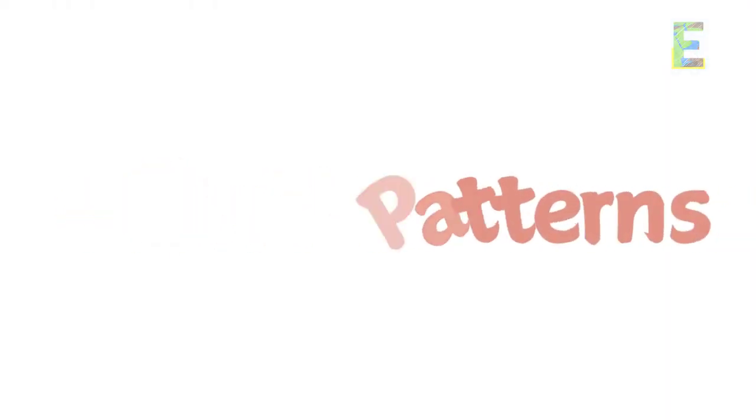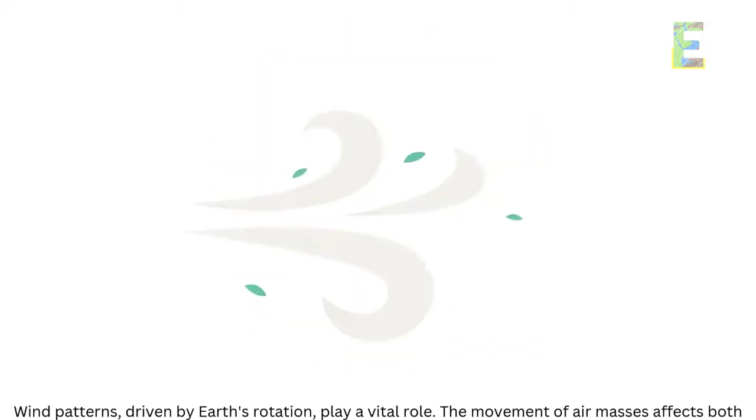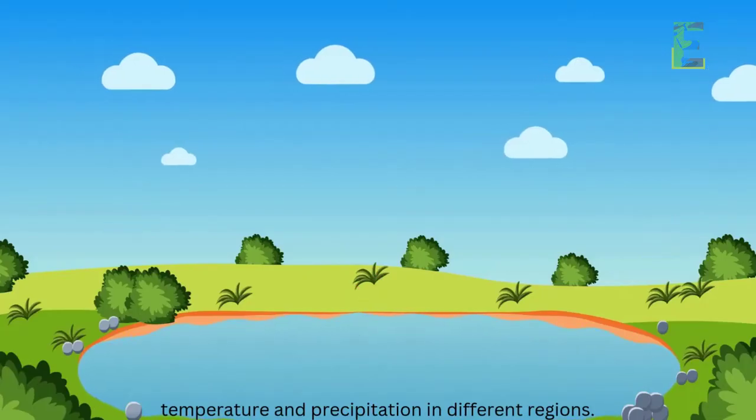Wind patterns, driven by Earth's rotation, play a vital role. The movement of air masses affects both temperature and precipitation in different regions.